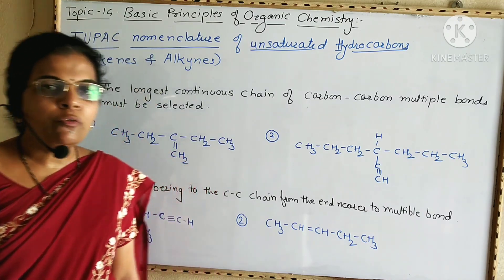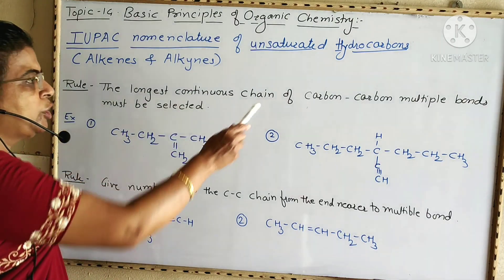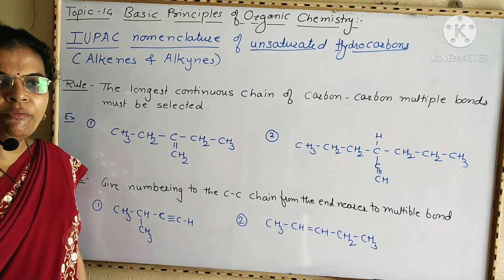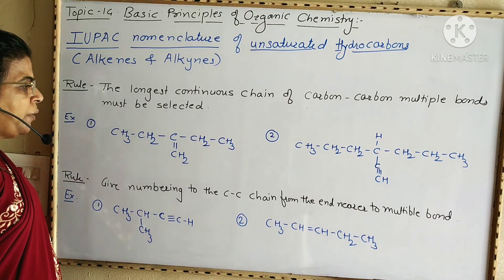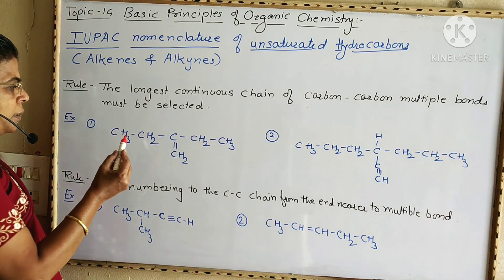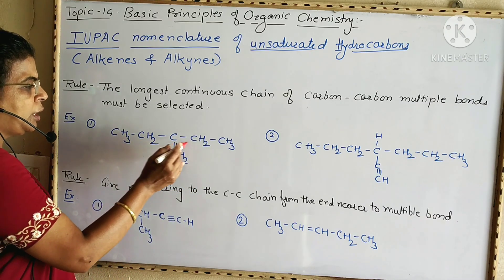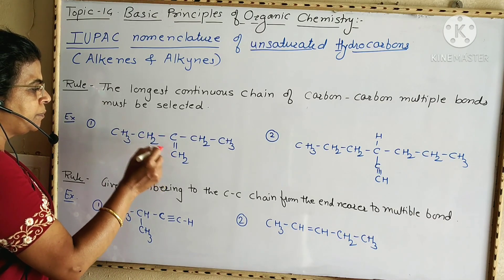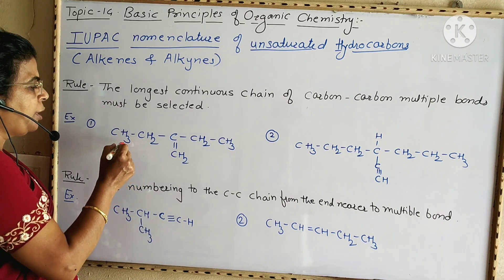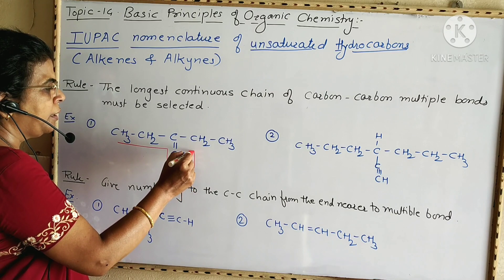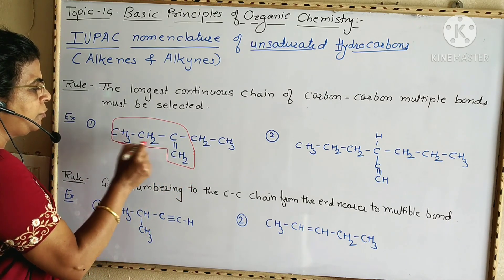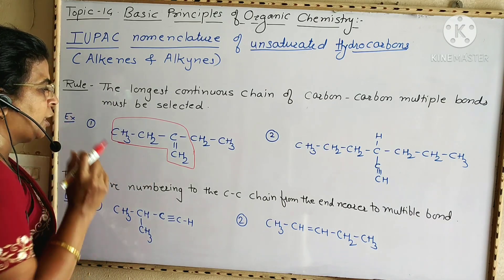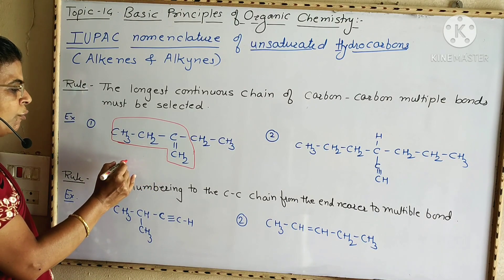The first rule is: the longest continuous chain of carbon atoms that contains a carbon-carbon multiple bond is selected. In the first example, the longest chain contains five carbon atoms, but it does not possess a multiple bond — double or triple. If we consider the chain of four carbons, it contains a carbon-carbon double bond. Therefore, that continuous chain of four carbon atoms is selected.